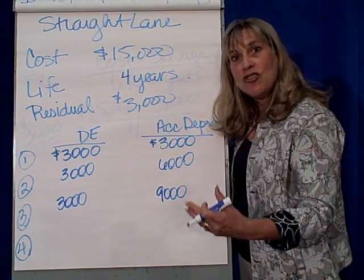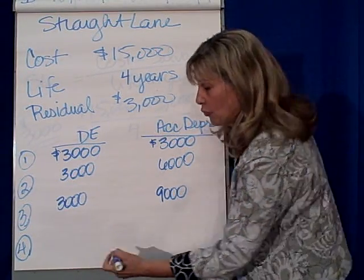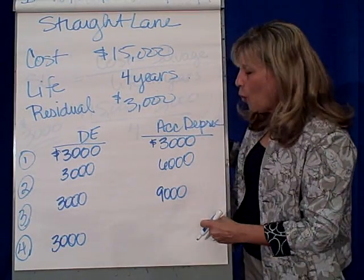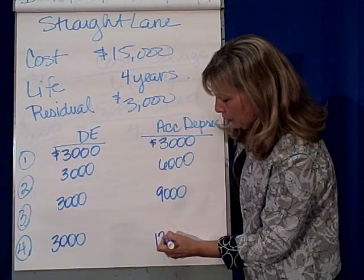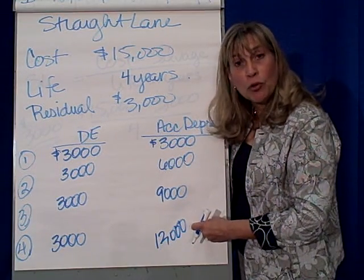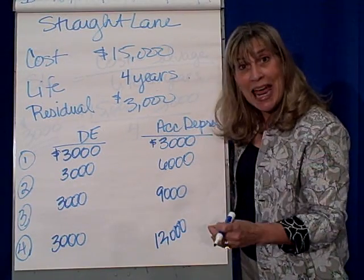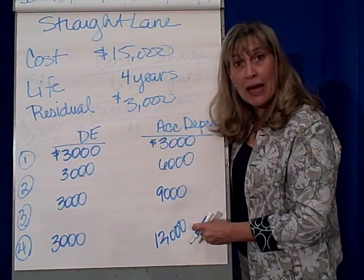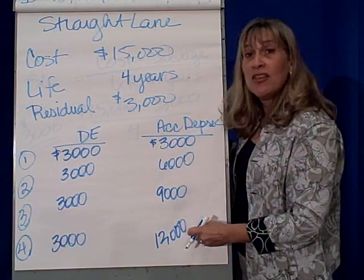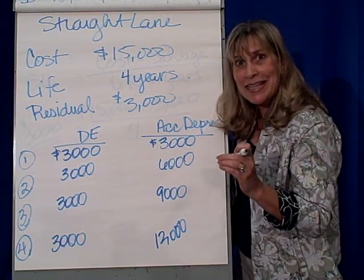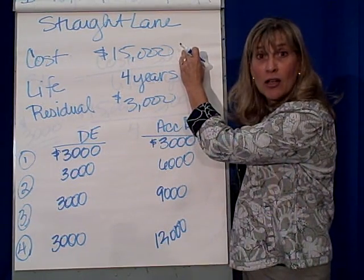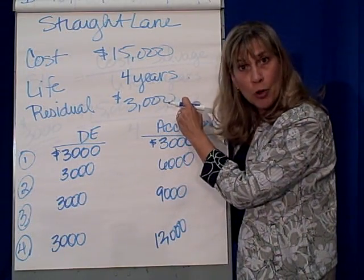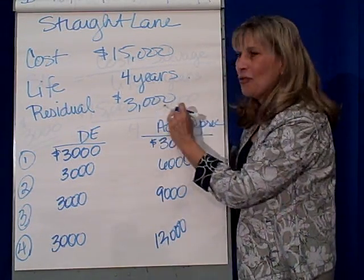In year four, the last year of its useful life that we make the depreciation entry, we debit depreciation expense and credit accumulated depreciation again for $3,000. So what is in the accumulated depreciation account? $12,000. We said we would depreciate this asset down to its salvage value. This accumulated depreciation of $12,000, subtracted from the $15,000 cost, means the asset is now on our books net at $3,000 — the book value or net book value.